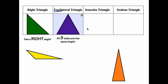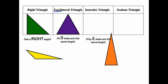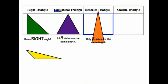Moving on to the isosceles triangle — an isosceles triangle has two sides the same. Only two sides are the same. Looking at our yellow and our orange triangle, we can see that sides one and two of this triangle are the same, so this is going to be an isosceles triangle.